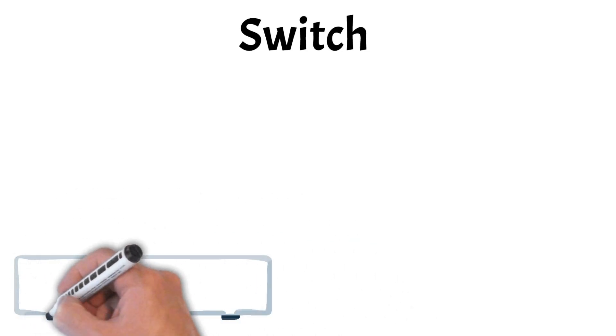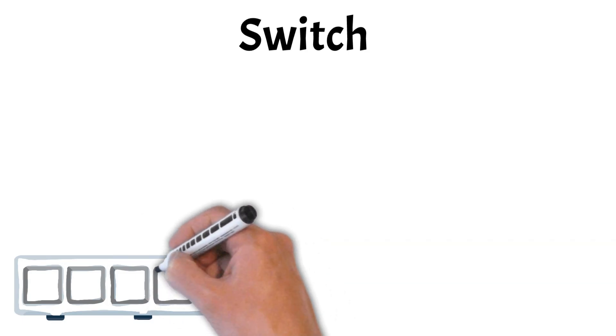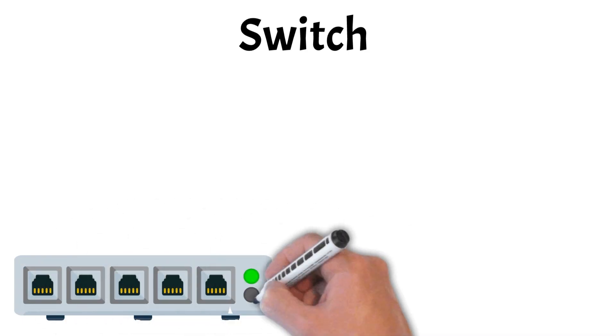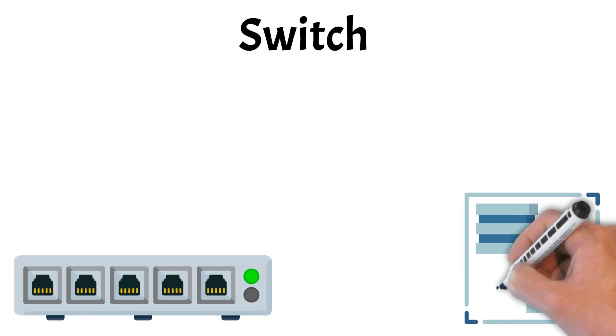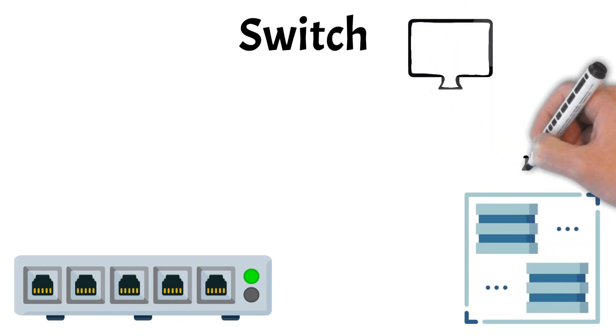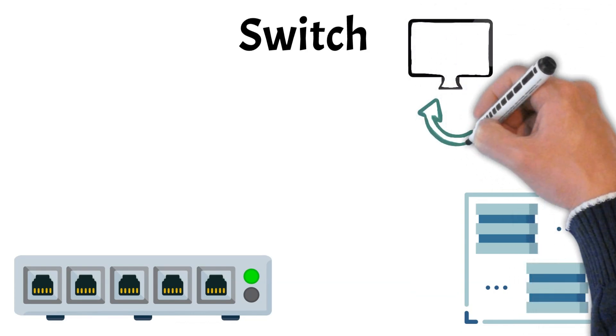Next, let's explore switches, another essential component of network infrastructure. Switches are crucial network devices that facilitate communication between multiple devices within a local area network. They operate at the data link layer of the OSI model and are designed to receive, process, and forward data to the appropriate destination device, ensuring efficient data transfer.